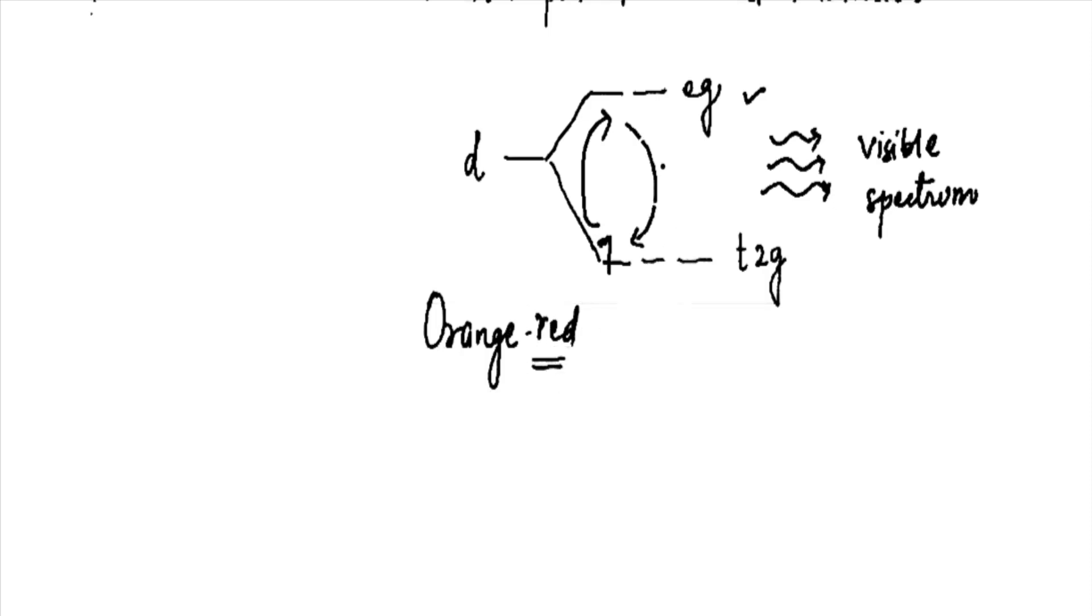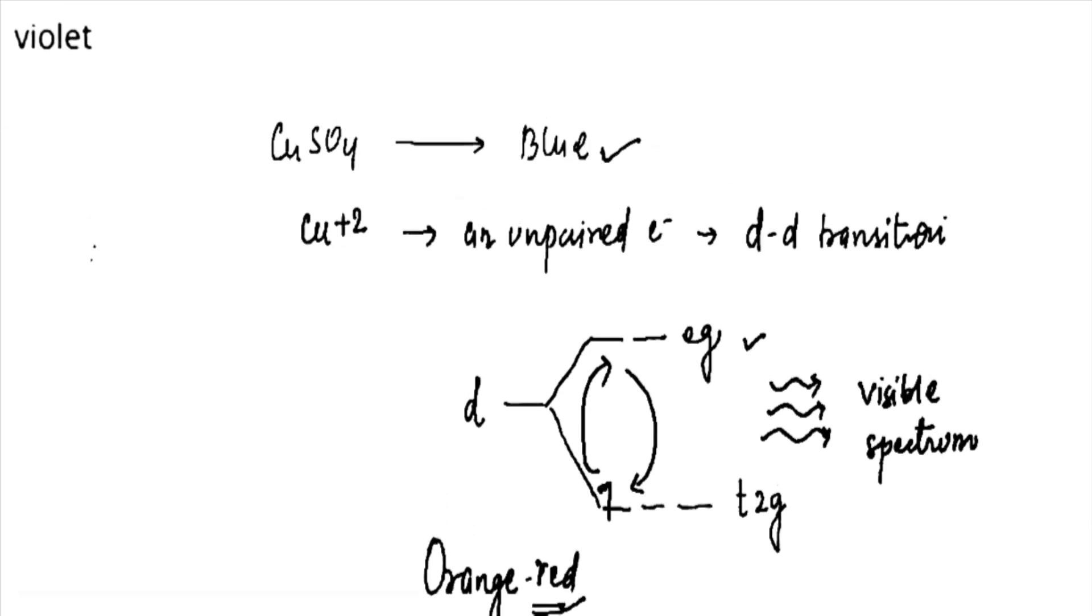Orange-red is something that it absorbed and blue color, that is the complementary of orange-red, is something that it is emitting. That blue color is visible by us.